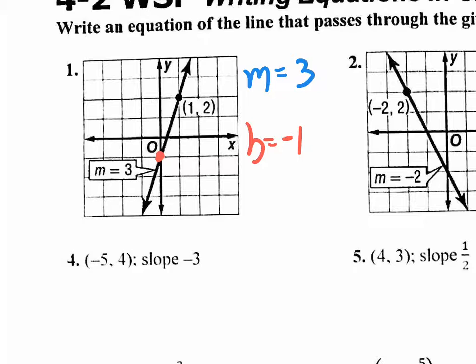Negative one is the b-value. So since you know your m and your b, the answer for number one is y equals 3x minus 1. There's your answer number one. And that's really easy to do.